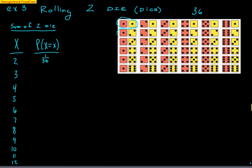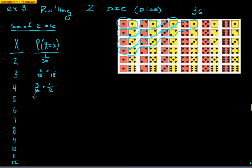A sum of 3: there are two ways — a 1 and a 2, or a 2 and a 1 — so that's 2/36, which reduces to 1/18. A sum of 4: you could have 1-3, 2-2, or 3-1 — that's 3/36, which reduces to 1/12. A sum of 5: there are 4 ways — 1-4, 2-3, 3-2, or 4-1 — so 4/36, which reduces to 1/9.